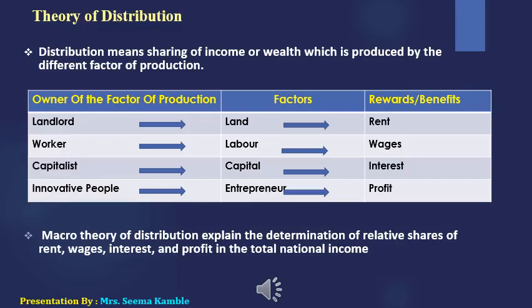The benefit received by factors of production actually goes to the people in society who own those factors — in the form of rent, wages, interest, and profit. So the share of total national income distributed among the various classes — especially worker class and capitalist class — in the economy is what we study in the theory of distribution, which is one of the very important parts of macroeconomics. These are all the subject matters of macroeconomics. Thank you.